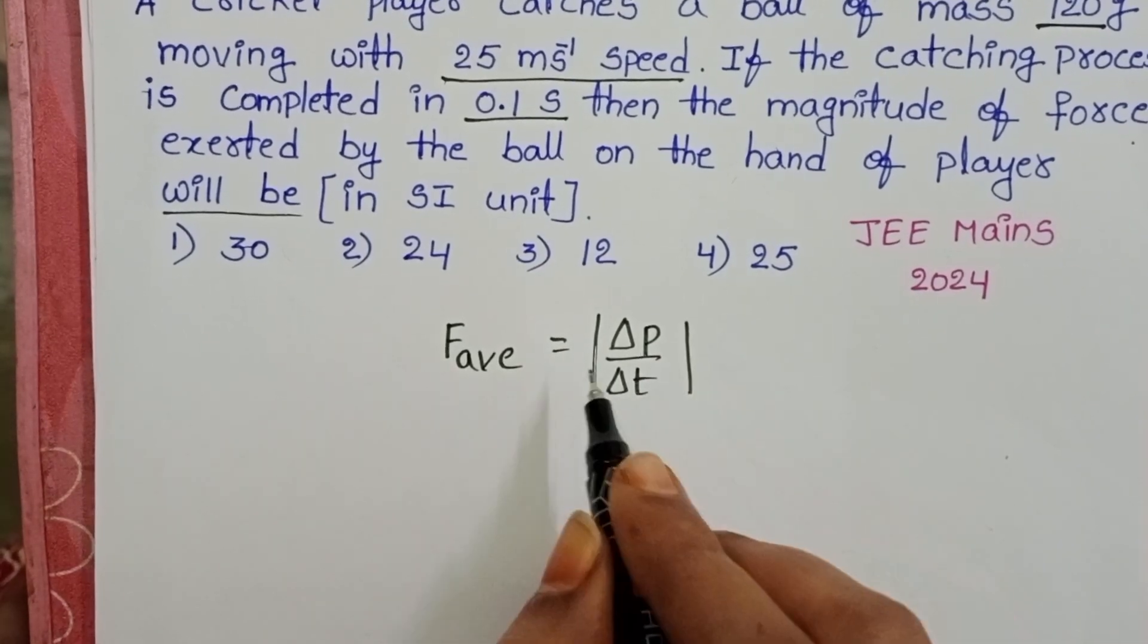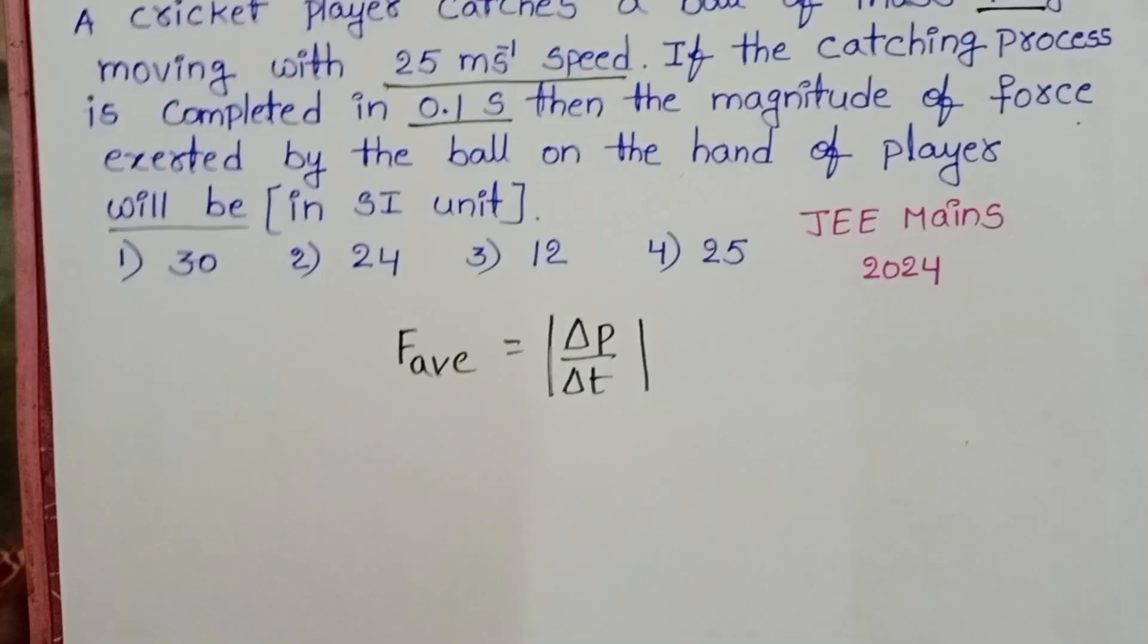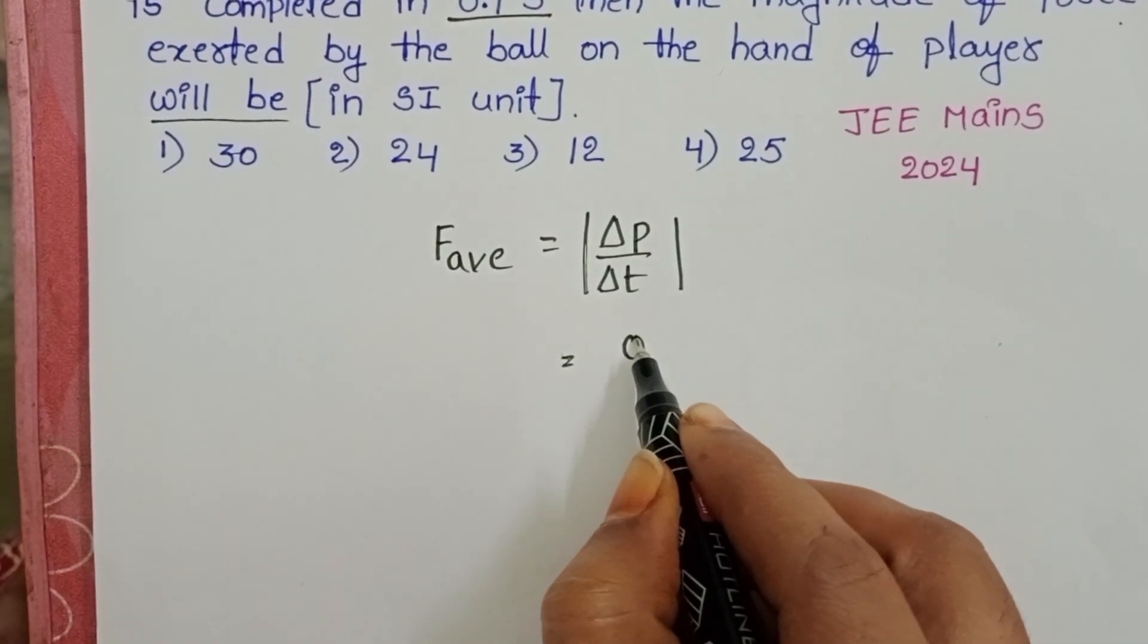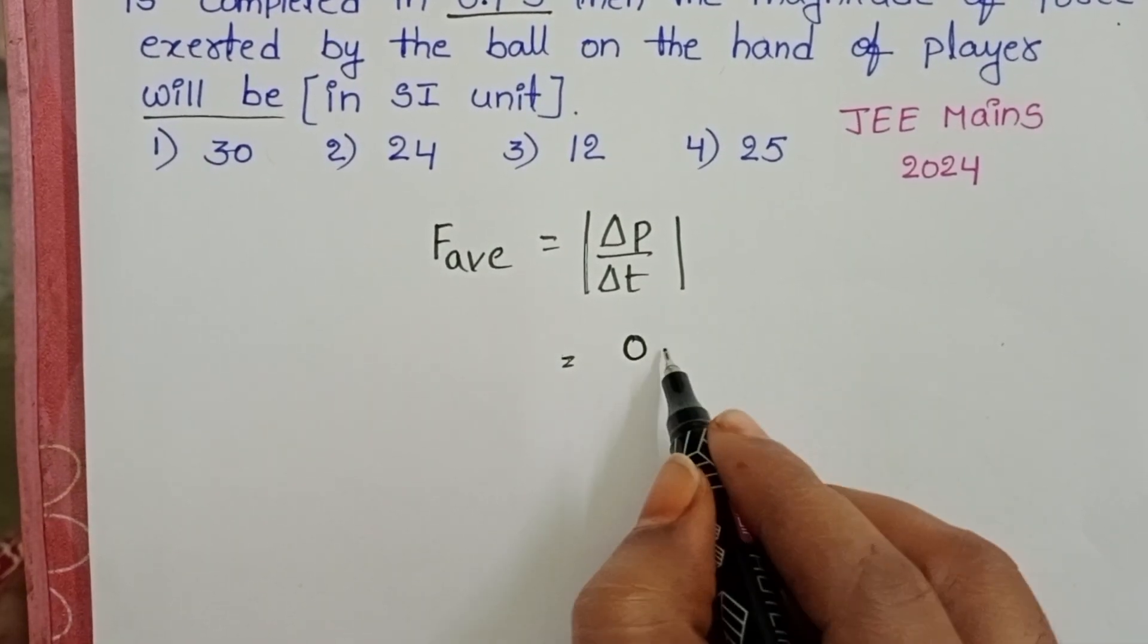Here, average force, so take in magnitude. Final momentum, ball comes to rest position. So, final momentum is 0.